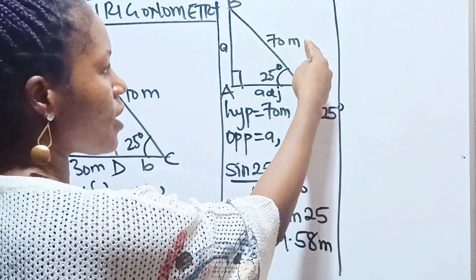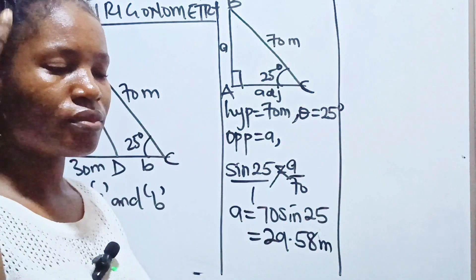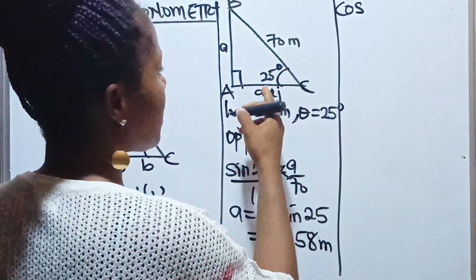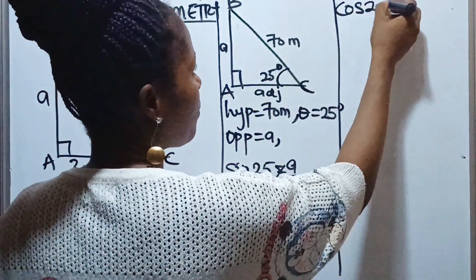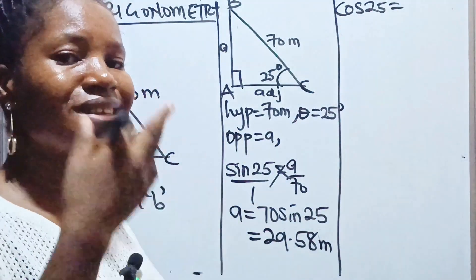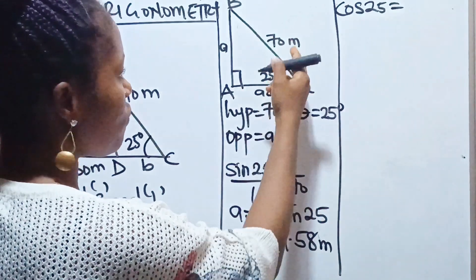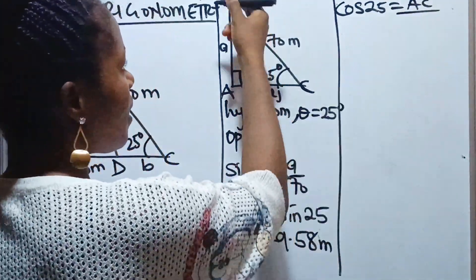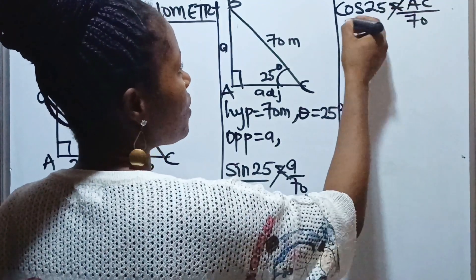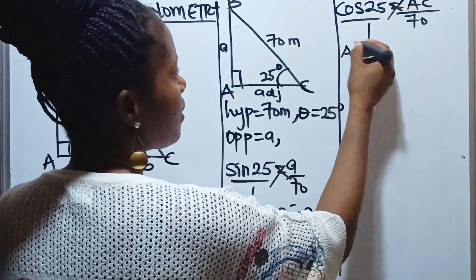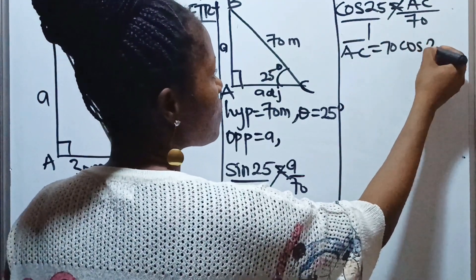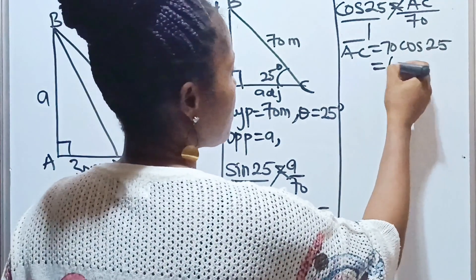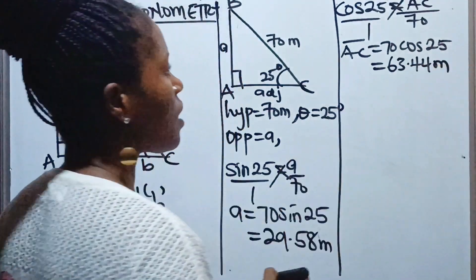Since we are looking for the adjacent side AC, we connect it to the hypotenuse. Adjacent and hypotenuse are connected by cosine. So: cos(25°) = AC / 70. Therefore, AC = 70 × cos(25°), which gives us 63.44 meters.